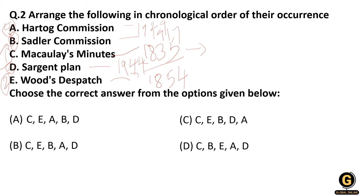So the correct order is: first Macaulay's Minutes (1835), second Wood's Dispatch (1854), third Saddler Commission (1917), fourth Hartog Committee (1929), and fifth Sergeant Plan (1944). Remember these years very carefully — there will definitely be a question on pre-independence and post-independence education commissions.